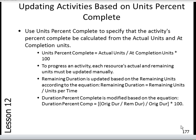This is a continuation of Lesson 12, Calculating Percent Complete. In this demonstration we will learn how to update activities based on units percent complete. You can use units percent complete to specify that the activity's percent complete be calculated based on actual units and at-completion units. Units percent complete is equal to actual units divided by at-completion units times 100.